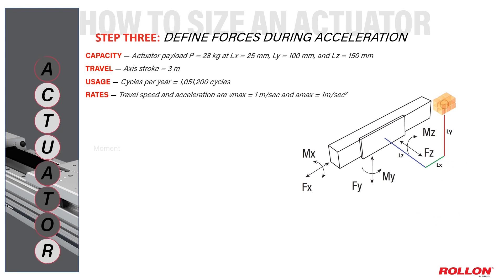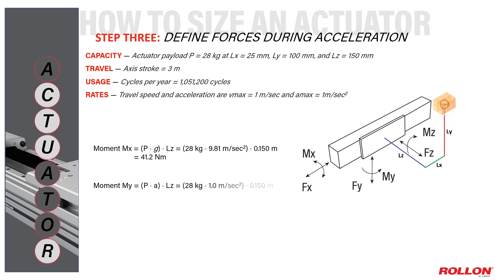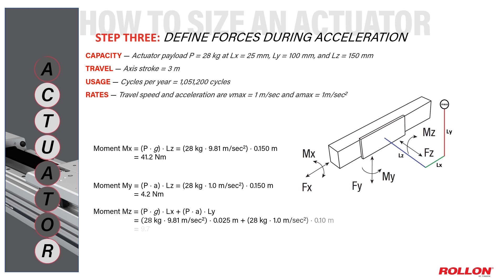Moment Mx remains the same as well, but moment My is a different story. Here the payload is multiplied by application acceleration and the moment arm of Lz. Moment Mz calculations must also account for the effects of actuator acceleration on payload and its gravity center offset from the carriage face in the Y direction. Added to that is the product of the payload, G, and the moment arm of the payload center of gravity offset in the X direction from the carriage center.